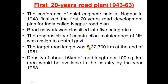The target road length was 532,700 kilometers by the end of 1961. A density of 16 kilometers of road per 100 square kilometers of area would be available in the country by the year 1963.